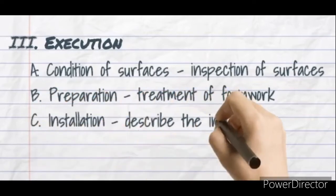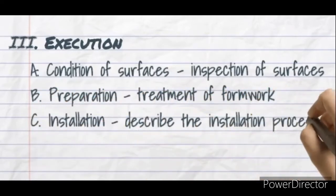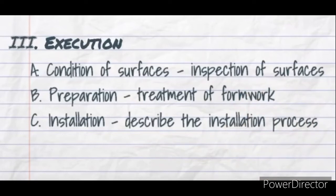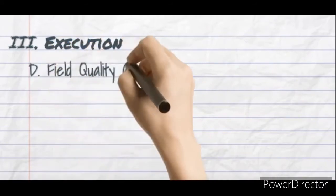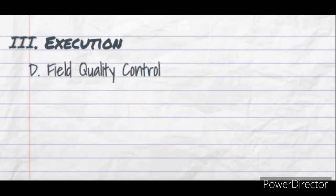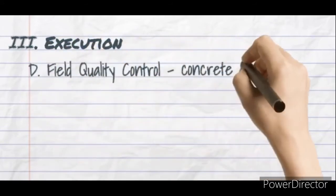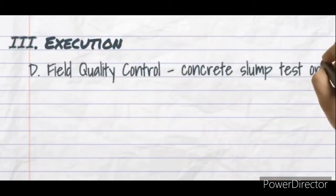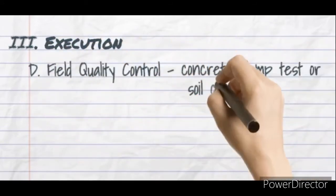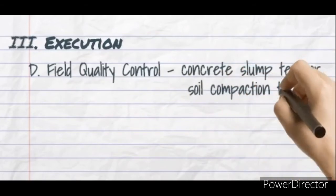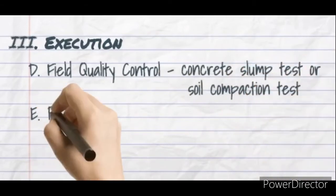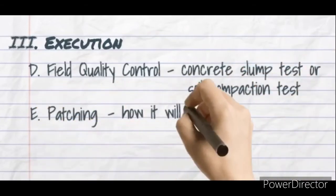Third is Installation, Application, or Workmanship. This is the part where you describe how the material or product will be installed or applied. Fourth is Field Quality Control, where concrete slump tests or soil compaction tests are indicated.